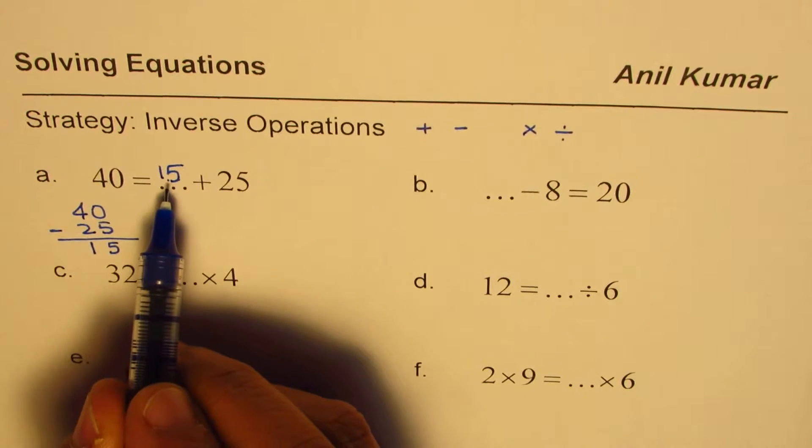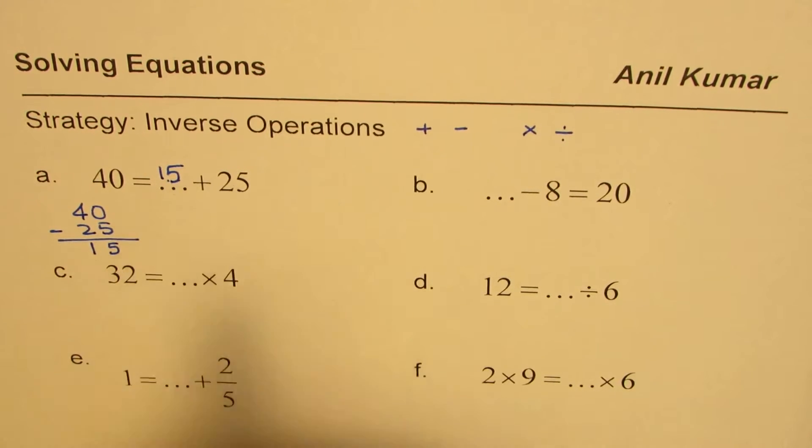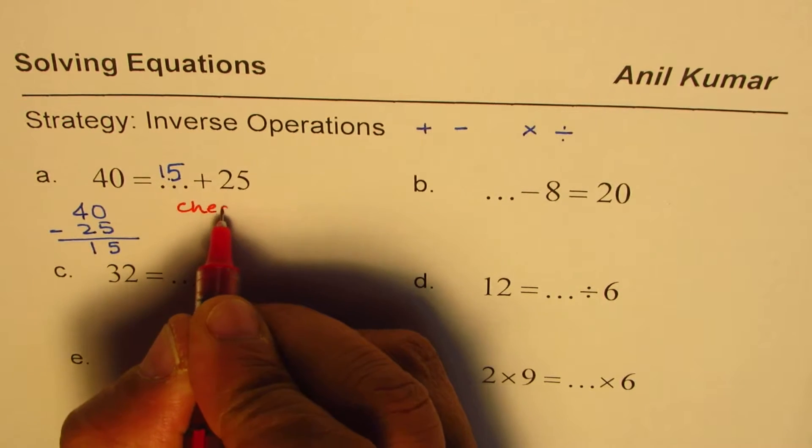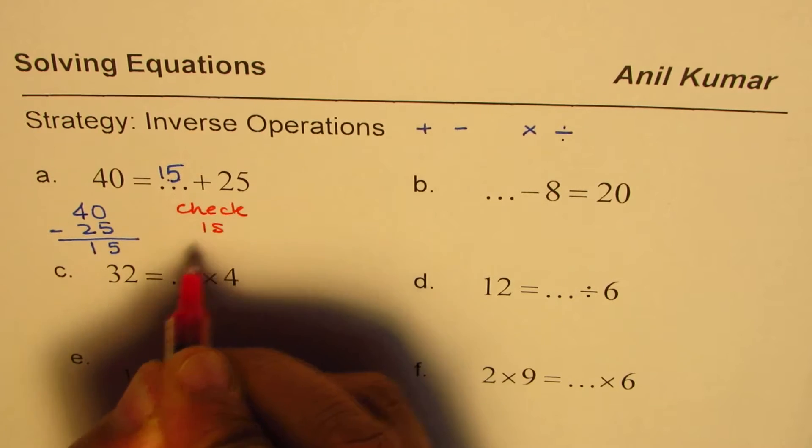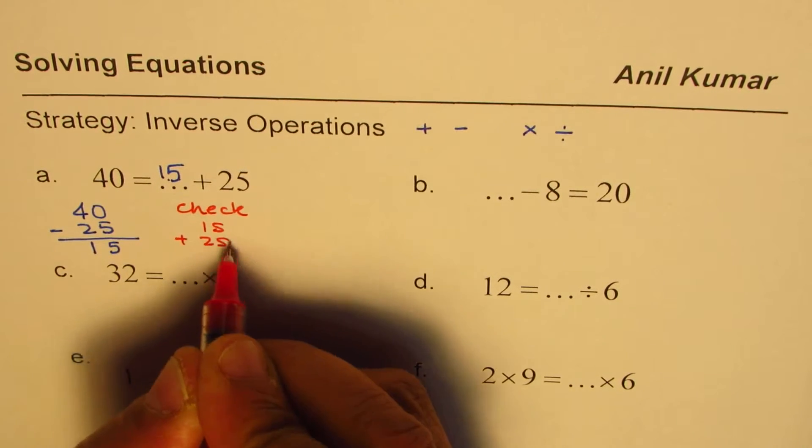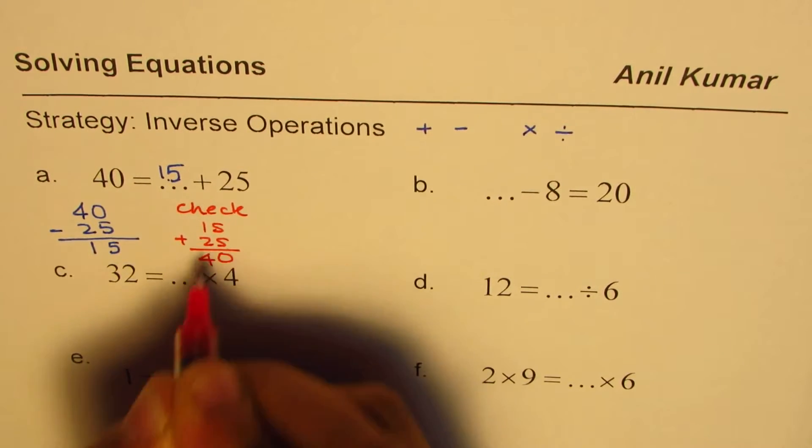So you get the number 15 here. So we get 15. If you add 15 and 25 you can check. So let us check. 15 plus 25 is indeed 40. So it works.